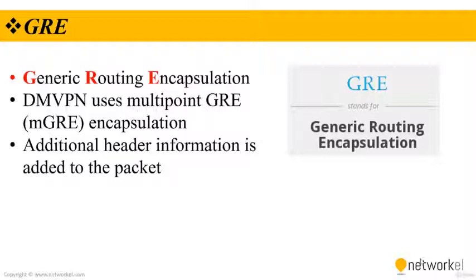DMVPN uses multi-point GRE. MGRE encapsulation supports dynamic routing protocols, which eliminates many of the support issues associated with other VPN technologies. GRE tunnels are classified as an overlay network because the GRE tunnel is built on top of the existing transport network, also known as an underlay network.